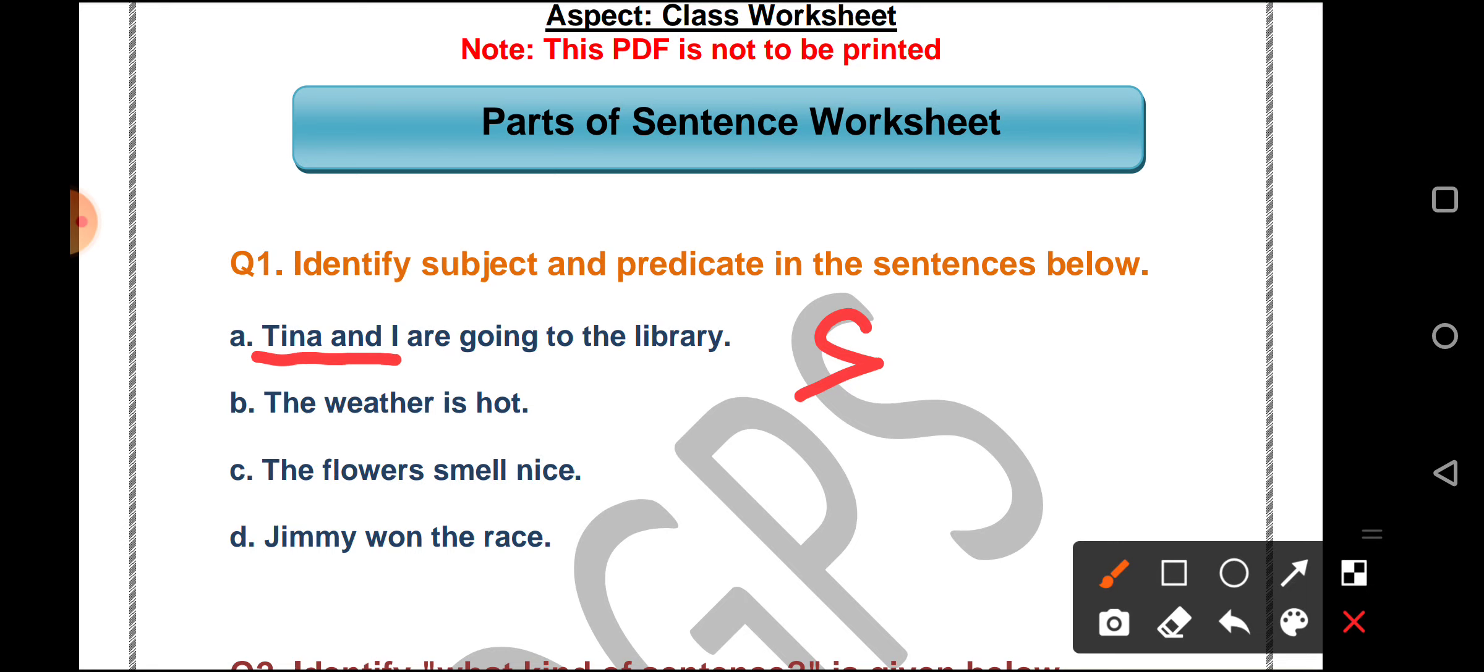The weather is hot. So what are we talking about in the sentence? The weather. So this will be the subject and is hot is the predicate.